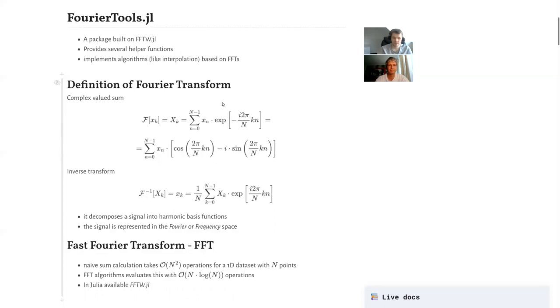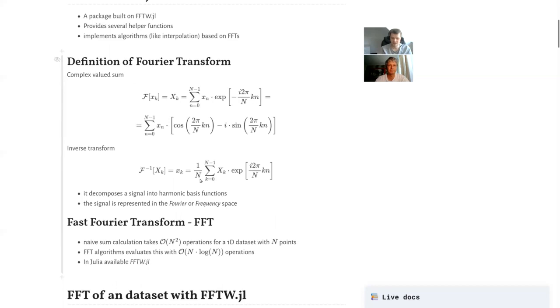So what's the Fourier transform? Purely mathematically defined, a Fourier transform is a complex valued sum, as you can see here. You can also decompose that into a sum with cosine and sine terms. And the inverse transform is very similar - there is some normalization factor and also different sign. However, the essence from that equation is that the Fourier transform decomposes a signal into harmonic basis functions.